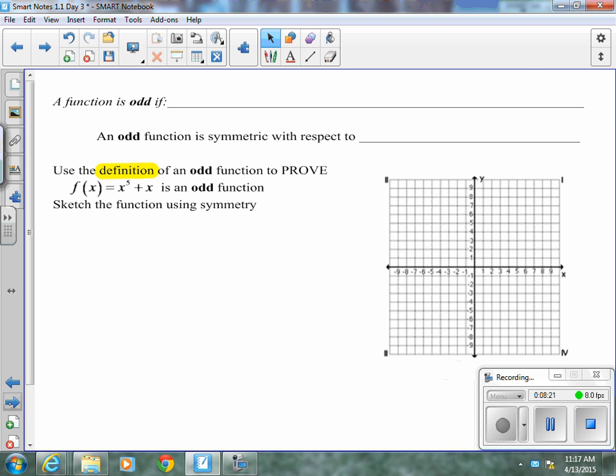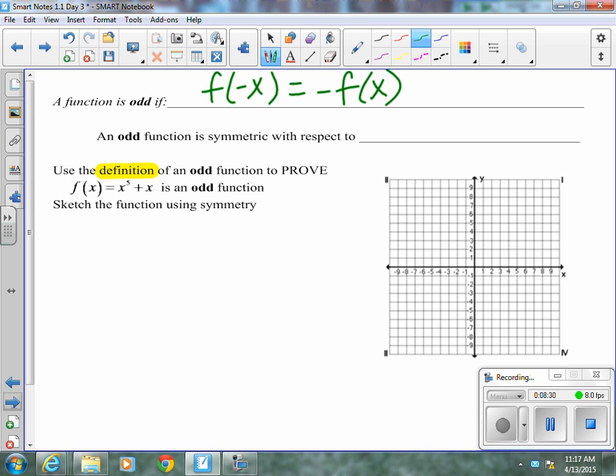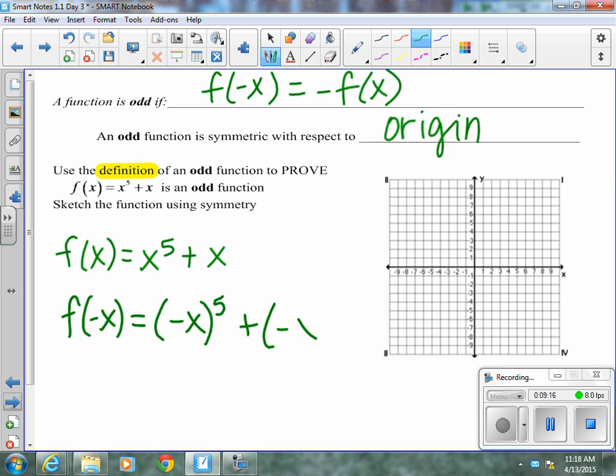But on the other hand, a function is odd if F of negative X is equal to the opposite of F of X. And an odd function is symmetric with respect to the origin, which is a little bit weird. Just means that if you have the point 1, 2, you're also going to have the opposite of each of those points. So like 1, 2 and negative 1, negative 2, 3, 3 and negative 3, negative 3. So the signs on both ordered pairs change when you graph those. Now algebraically, we know that F of X is X to the fifth plus X. F of negative X is negative X to the fifth plus negative X, which works out to be negative X to the fifth, because negative 1 to the fifth power is going to keep a negative minus X.